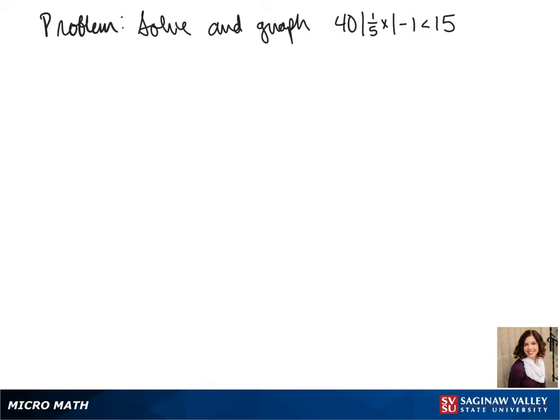Welcome to another day of algebra. Today we'll be solving and graphing the inequality 4 times the absolute value of 1 fifth x minus 1 is less than 15.